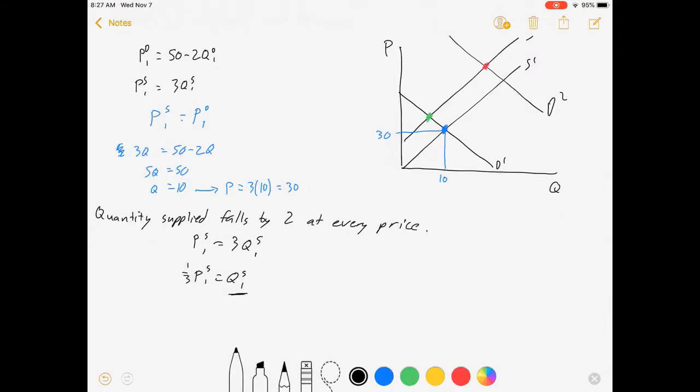And so all I have to do, quantity falls by 2 at every price. That means qs2 is equal to qs1. So our new supply curve is equal to our old supply curve minus 2. So that's 1 third ps minus 2. And that is our new supply curve.